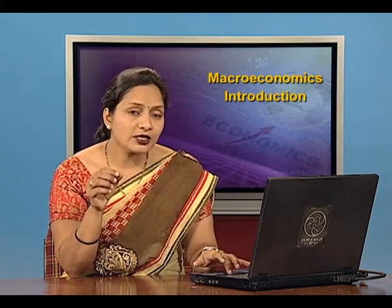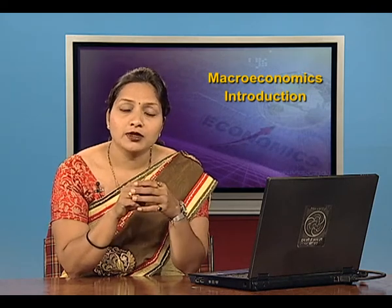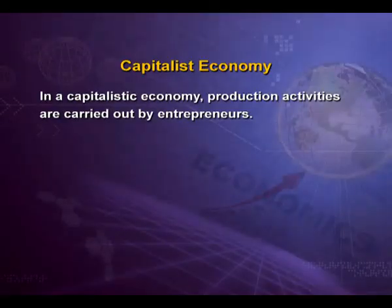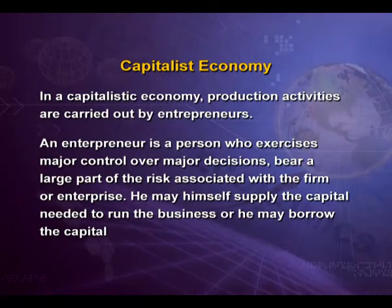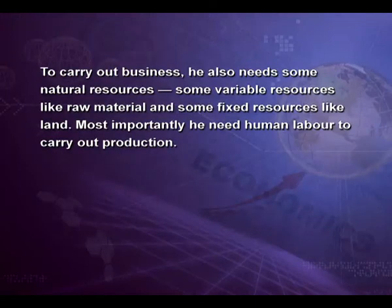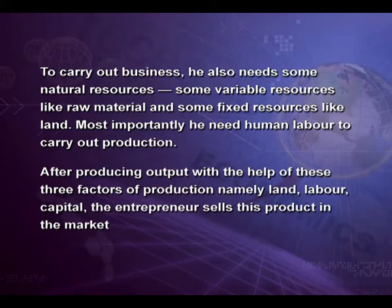The health of the economy is reflected by income. In this book we shall examine the working of a capitalistic economy — a free market economy. In a capitalistic economy, production activities are carried out by entrepreneurs. An entrepreneur is a person who exercises major control over major decisions, bears a large part of the risk associated with the firm or enterprise, and may himself supply or borrow the capital needed to run the business. He also needs natural resources, variable resources like raw material, fixed resources like land, and most importantly, human labor to carry out production.